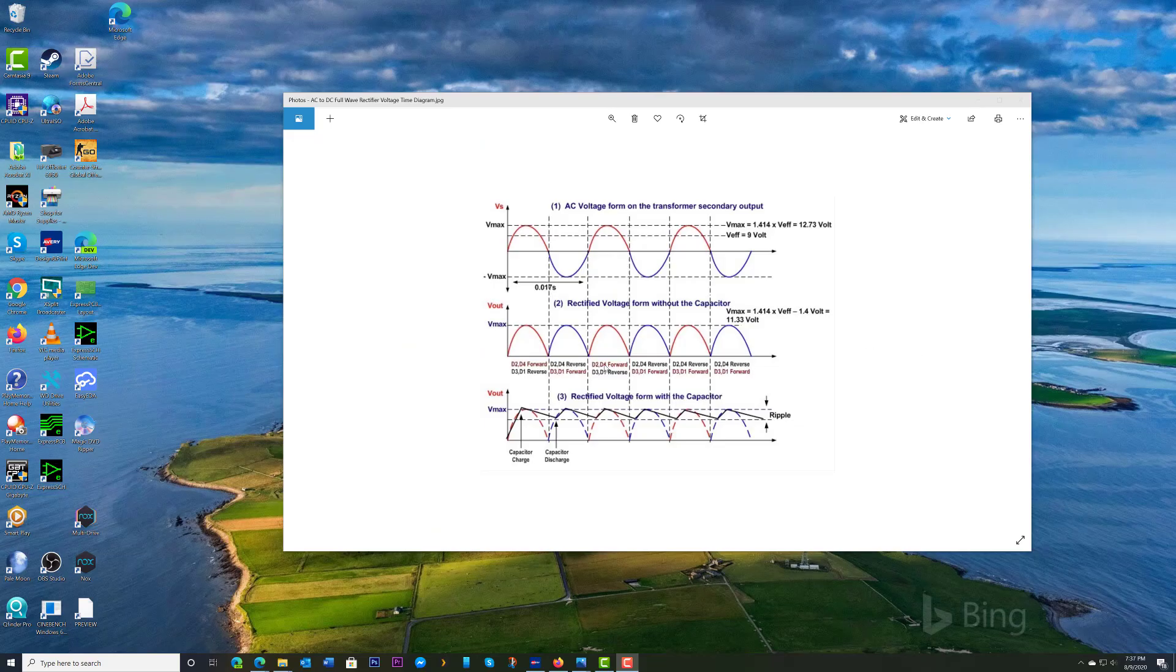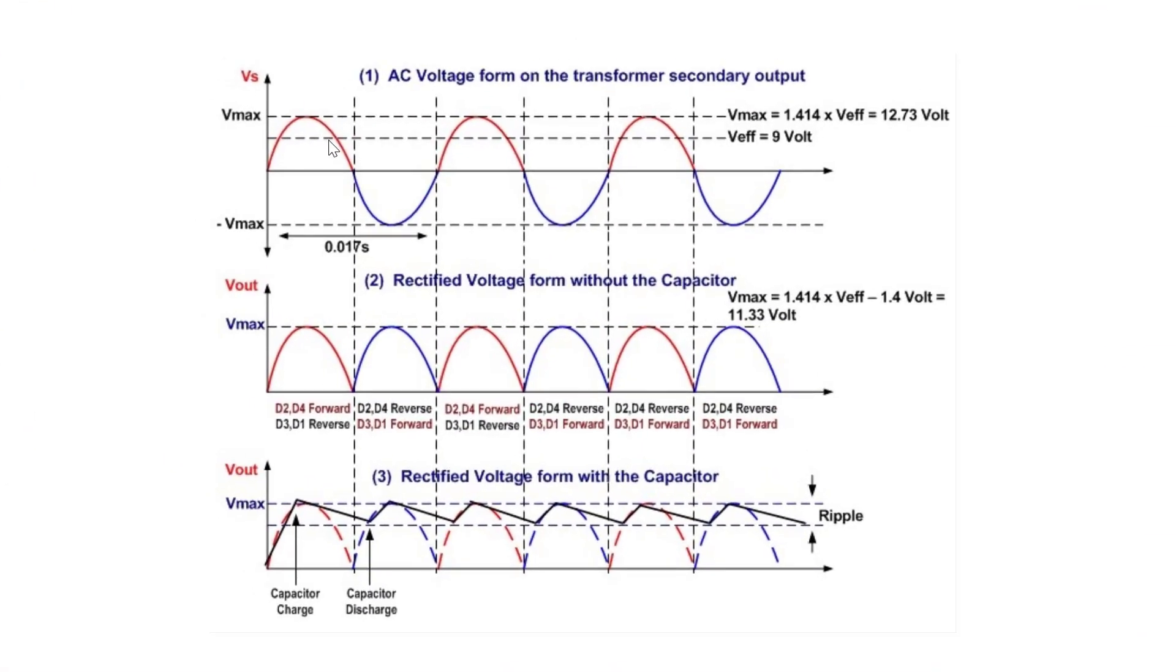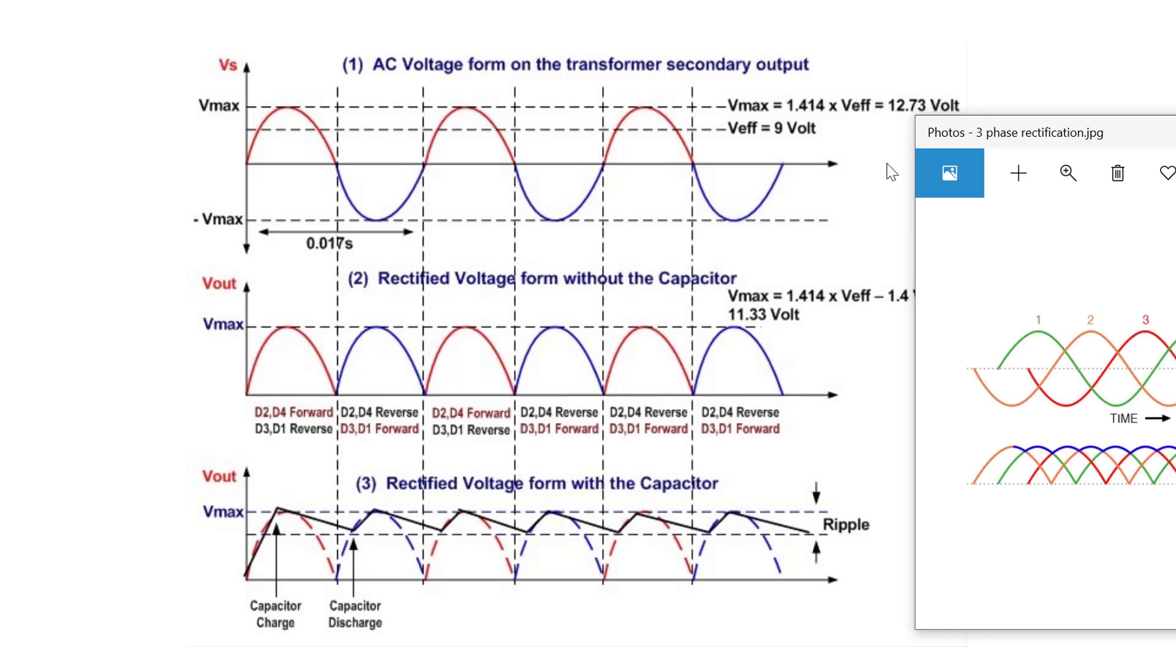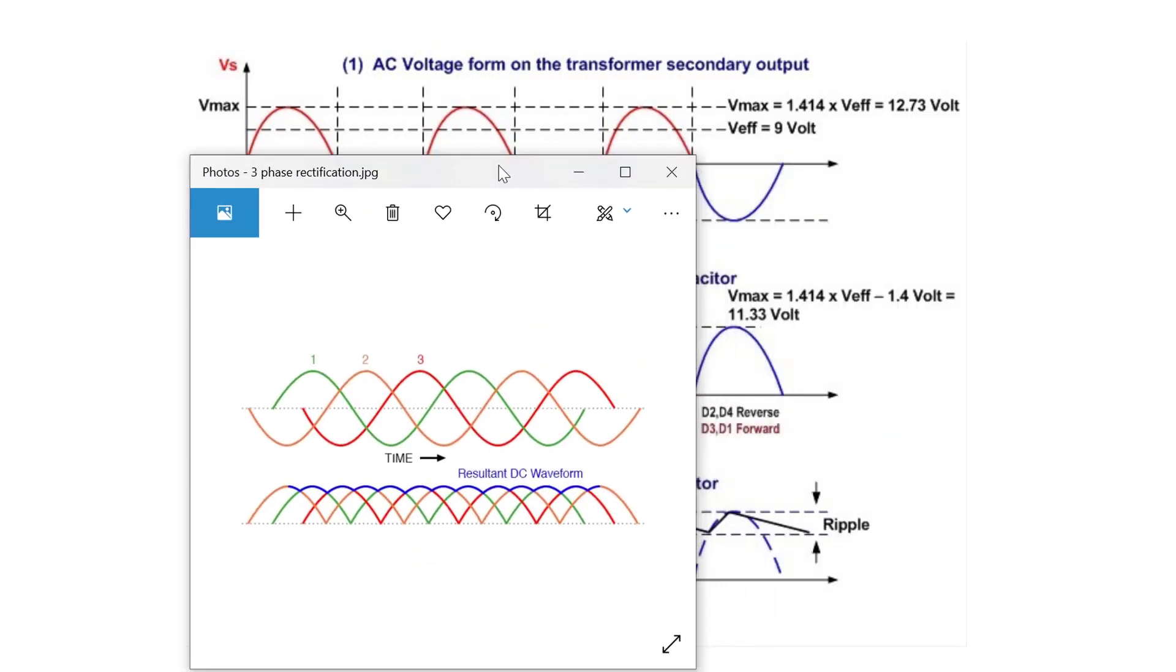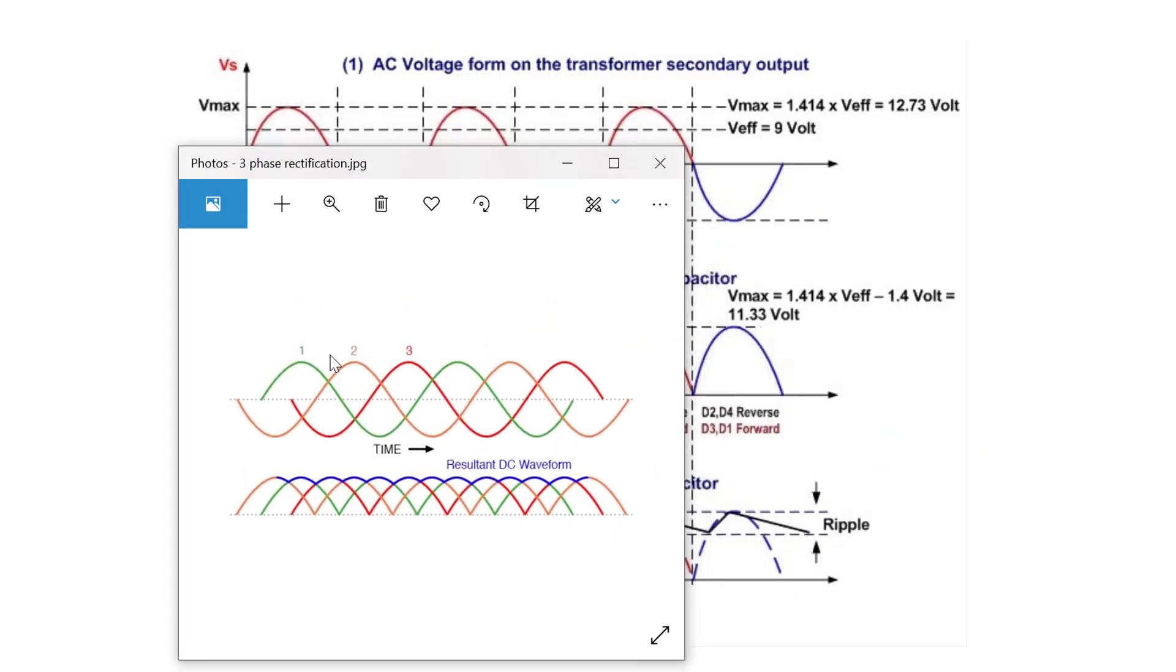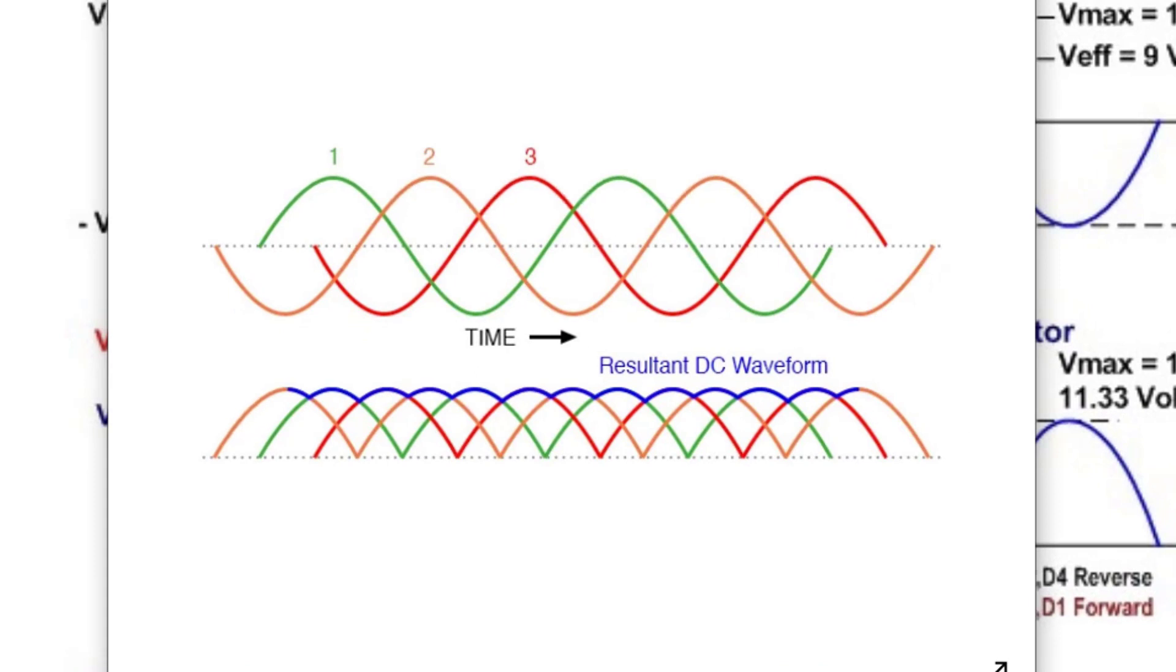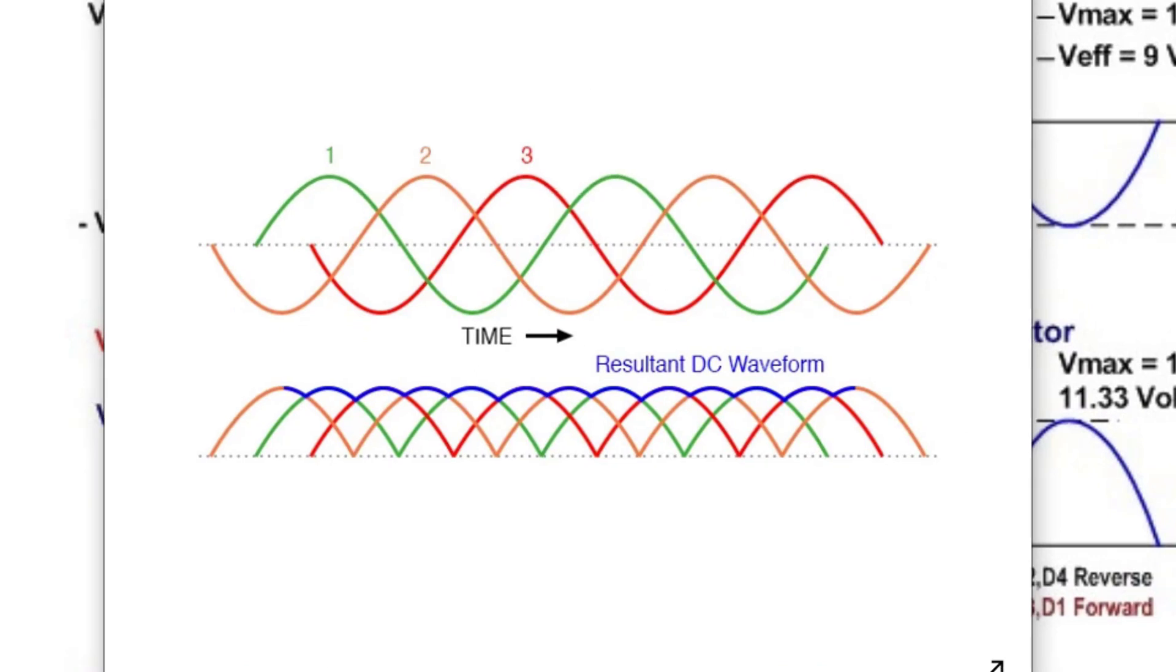I almost forgot to show you one thing here. So this was the single phase rectification that you'd expect and the ripple and whatnot. But if you look at just real quick, I'm trying to line these up to where the time, it looks like this peaks here and this peaks here. So the time should be about the same right here. Just to show you these peaks, how far apart they are on single phase.